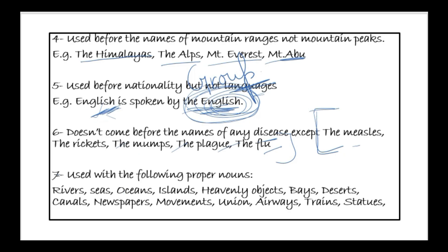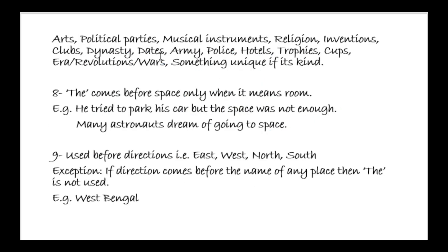Rule 7: 'The' comes before 'space' only when it means 'room'. When 'space' refers to the place where astronauts travel, do not use 'the'. For example: 'Many astronauts dream of going to space' — no 'the', because space here doesn't mean room. But: 'He tried to park his car, but the space was not enough' — here space means room, so 'the' is used.